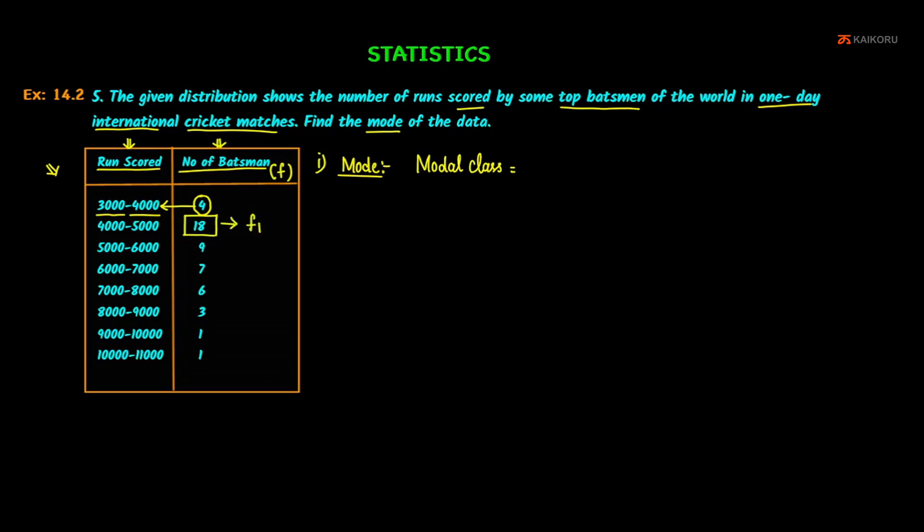So this is the table. F1 - Frequency F1 is 18. Highest frequency corresponding.